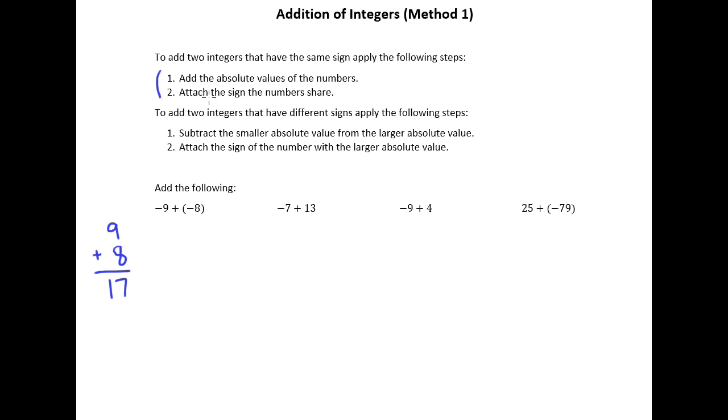Step two says to attach the sign that the numbers share. Well, the numbers both shared a negative. They both had a negative. And so that means after you're done adding these absolute values, you're just going to go ahead and attach that negative. So the way to think through this example in a practical sense is to say, I was $9 in debt and I just charged 8 more dollars to my credit card. So it makes sense that I would be even further in debt than I was before, or a negative number that is further to the left on the number line.